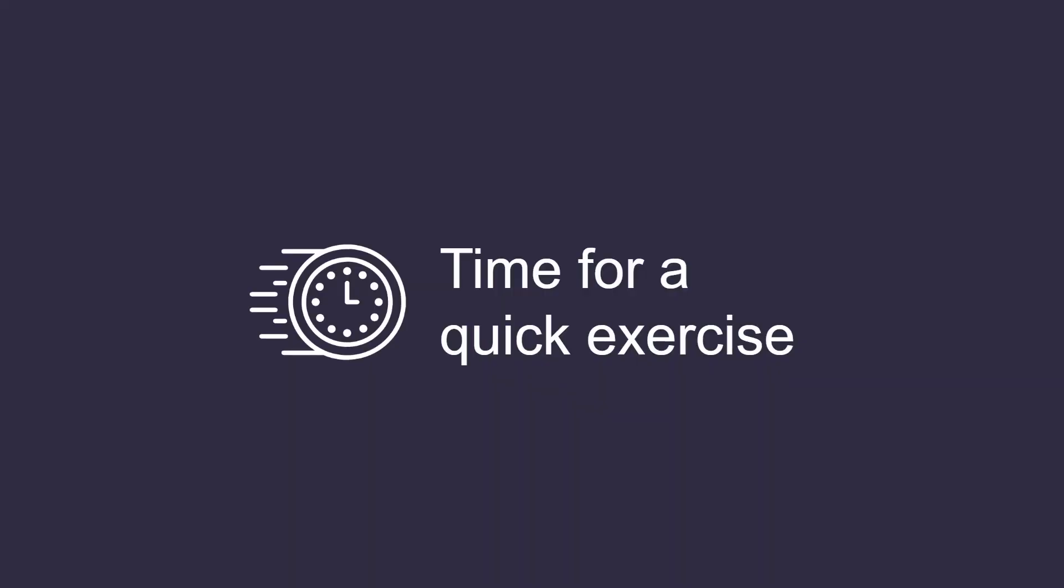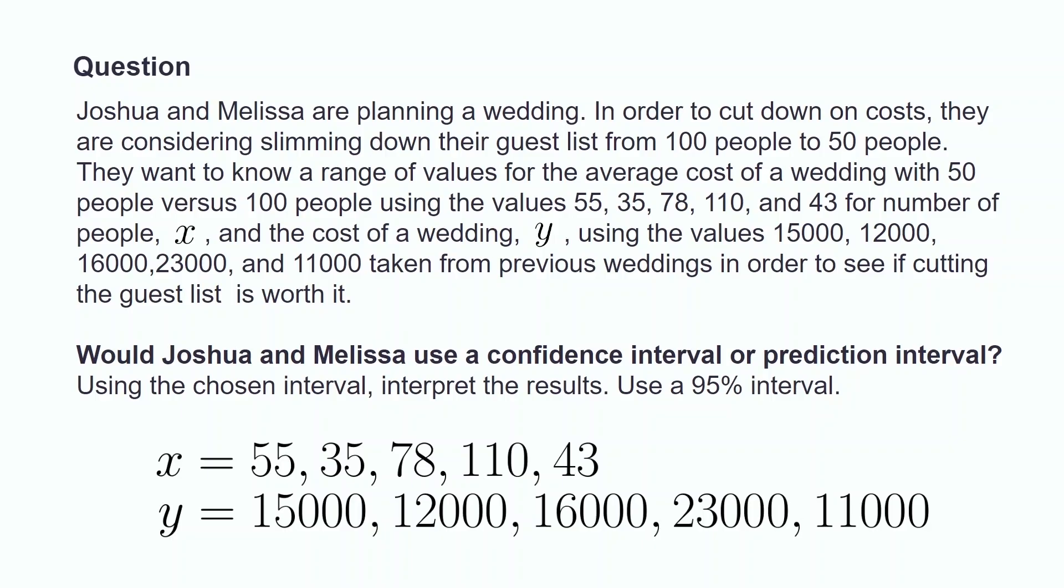Now that we have learned about prediction and confidence intervals, let's test our knowledge with a quick exercise. Joshua and Melissa are planning a wedding. In order to cut down on costs, they are considering slimming down their guest list from 100 people to 50 people. They want to know a range of values for the average cost of a wedding with 50 people versus 100 people using the x values 55, 35, 78, 110, and 43, and the y values 15,000, 12,000, 16,000, 23,000, and 11,000 taken from previous weddings in order to see if cutting the guest list is worth it.